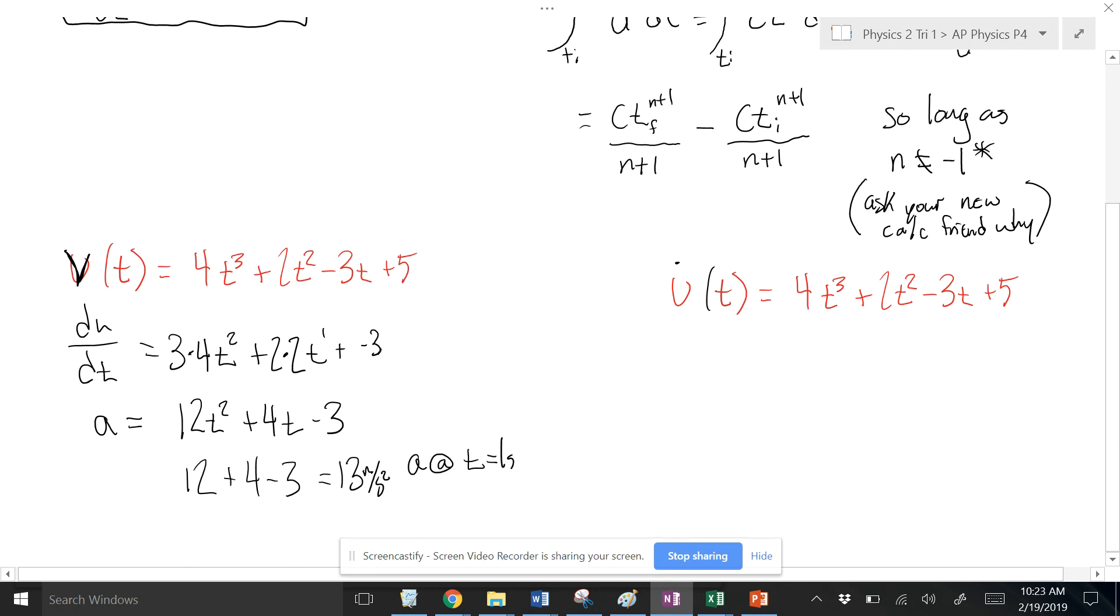So we got this thing going on here. I'm going to do that ct to the n plus 1 over n plus 1 thing for everything. So 4t cubed, that's going to be 4t to the 4th. And then I'm going to divide that by my new exponent. So that's over 4 plus 2t squared becomes 2t cubed. I'm going to divide by that new exponent minus 3t to the 1st. That's going to become 3t to the 2nd. I'm going to divide by my new exponent.